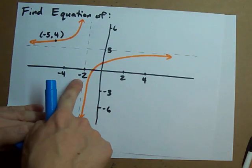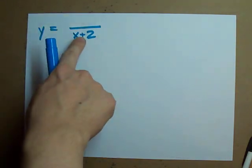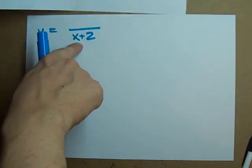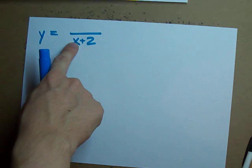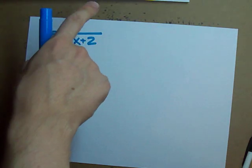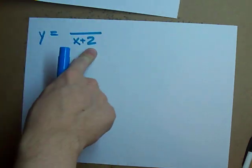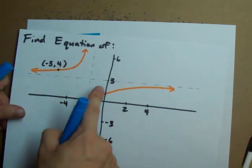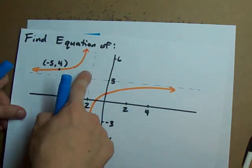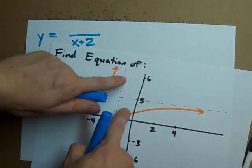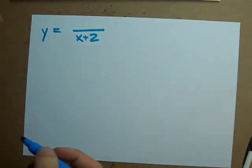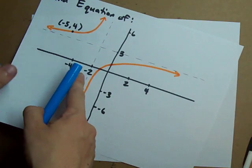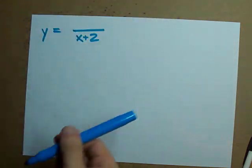Notice how I flip the sign because when x is negative two, the denominator is negative two plus two which is zero, and you can't divide by zero. That's why the graph doesn't even exist at negative two. It just gets closer and closer to negative two without actually touching it. Long story short, take your vertical asymptote, flip the sign, you get that.